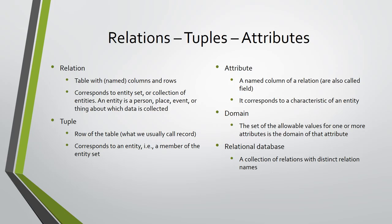A row of the table is called a tuple and corresponds to an entity instance, i.e., a member of the entity set. Tuples are what we usually call records. A named column of a relation is an attribute. It corresponds to a characteristic of an entity. Attributes are also called fields.